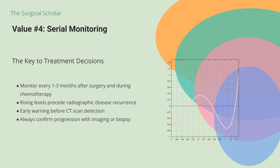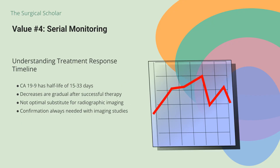Here's where CA-19-9 becomes truly valuable. Serial monitoring of levels — once every one to three months — is useful to follow patients after potentially curative surgery and for those receiving chemotherapy for advanced disease. Rising CA-19-9 levels usually precede the radiographic appearance of recurrent disease. This early warning system can alert your medical team to problems before they show up on CT scans. For patients who respond to therapy, decreases in CA-19-9 are a gradual process, since this tumor marker has an estimated half-life of 15 to 33 days.